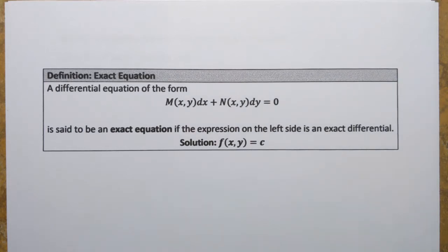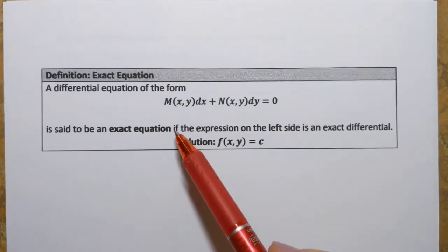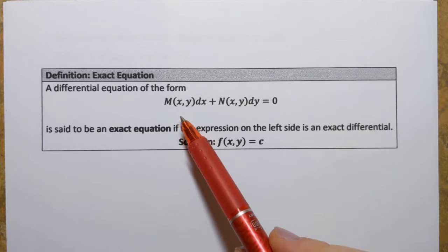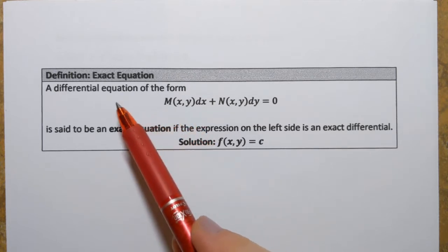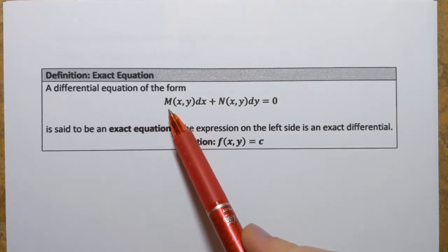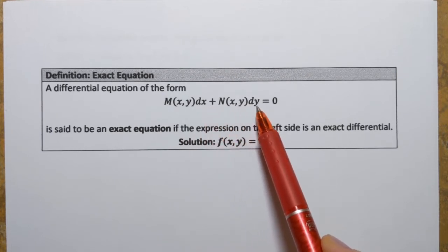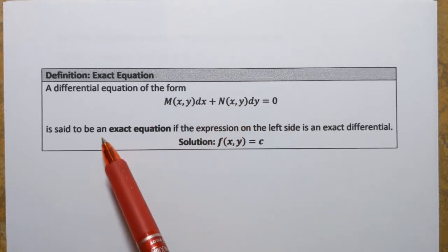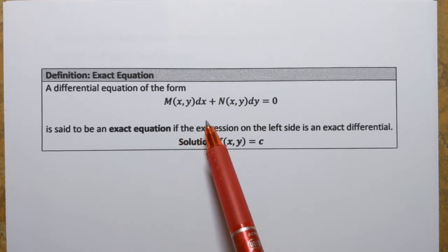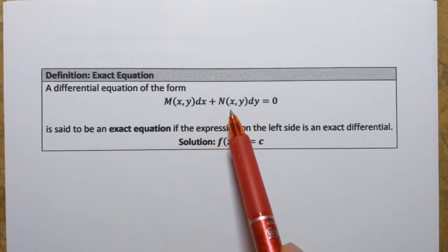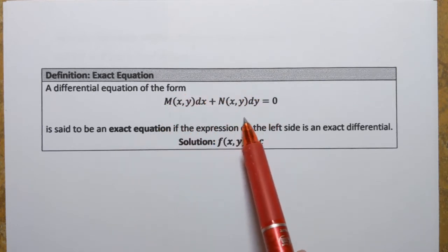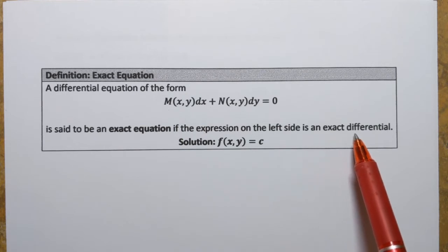Hi everyone. In this video we're going to learn some preliminary theory for exact differential equations. Here we have a definition for the exact differential equation: a differential equation of the form M(x,y)dx + N(x,y)dy = 0 is said to be an exact equation if the expression on the left side is an exact differential.